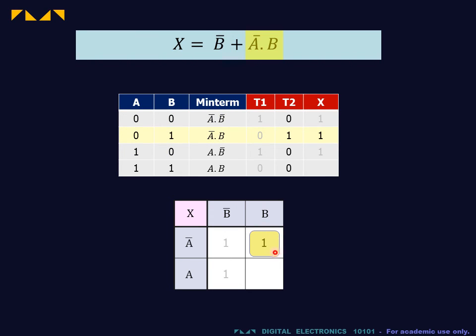Likewise for the A bar B term. Fill in the zeros, et voila, we have the Karnaugh map for the given expression.